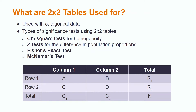Two-by-two tables are exactly what they sound like: a table with two columns and two rows, excluding the total row and column. We use two-by-two tables when working with categorical data, meaning the data is non-numeric.